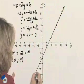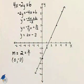I'll put arrows on the end. And this is the graph of 4x minus 2y equals 6.